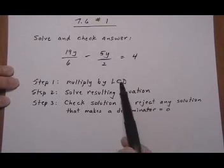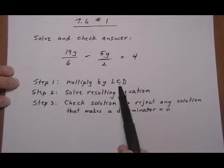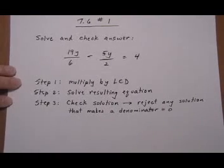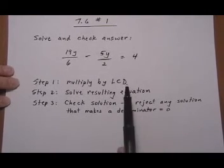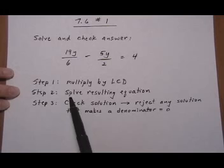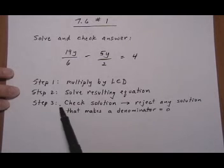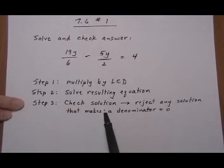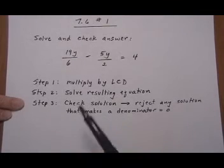First, we're going to multiply both sides of the equation by the LCD, and that'll get rid of denominators for us. Then we'll just have a regular linear equation to solve without any fractions in it. Then we're going to solve the equation that's resulting from that, and check the solution. And we're going to have to be really careful to check the solutions and make sure we don't get any solution that gives us a zero in the denominator.